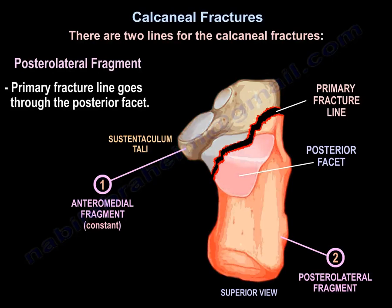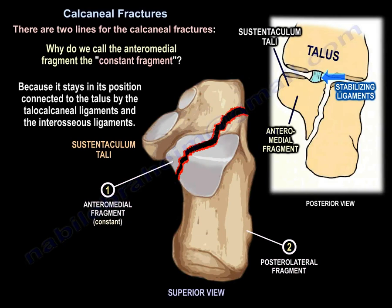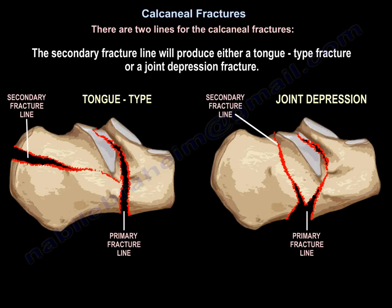There is the intermedial fragment — the constant fragment or the sustentacular fragment — and there is a posterolateral fragment. The primary fracture line goes through the posterior facet. We call the intermedial fragment the constant fragment because it stays in position, connected to the talus by the talocalcaneal and interosseous ligaments. There is a secondary fracture line, and it will produce either a tongue-type fracture or a joint depression fracture.